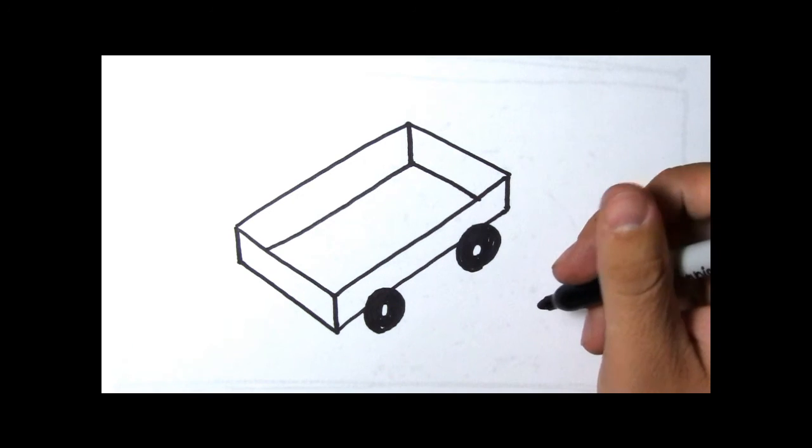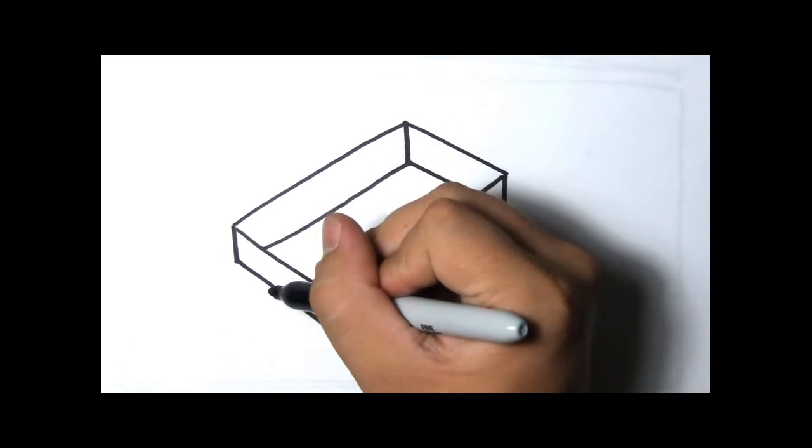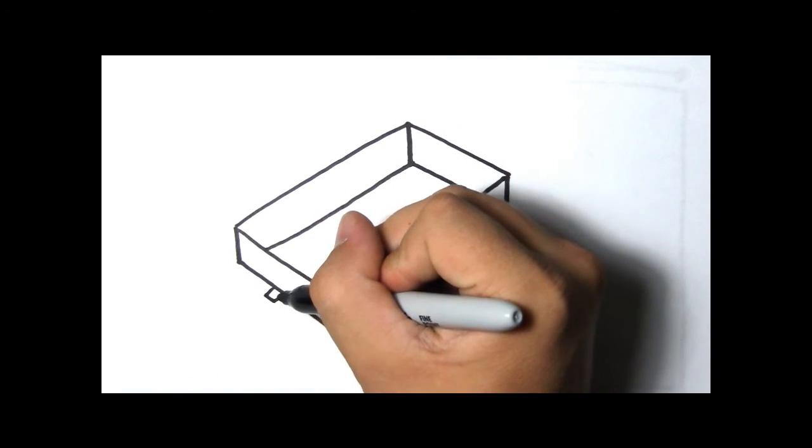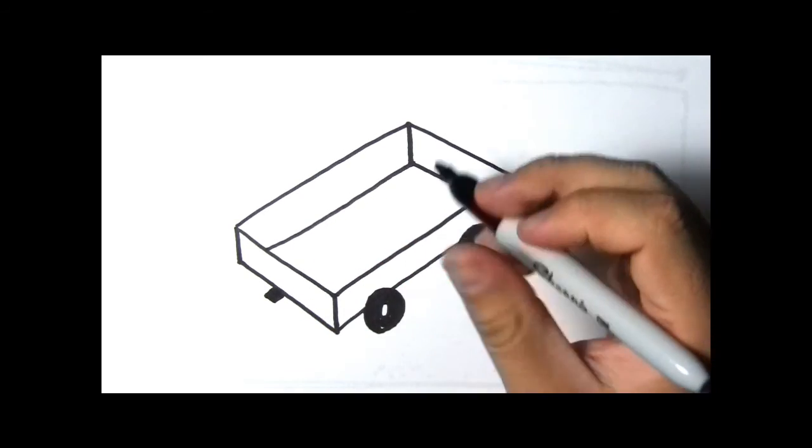Now that we've got our wagon, we should give it a handle so we can pull it around. How about up in the front, we make a little box.